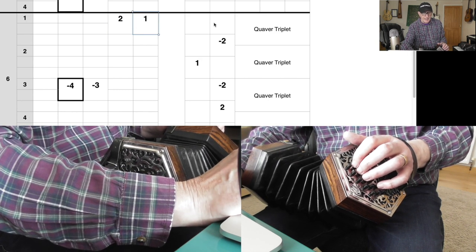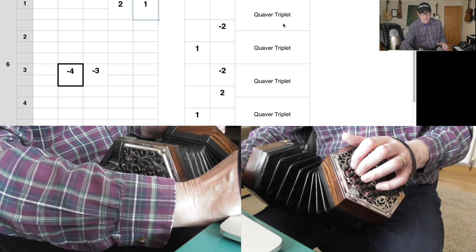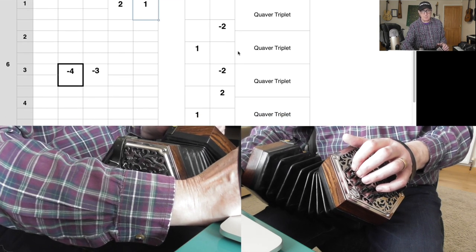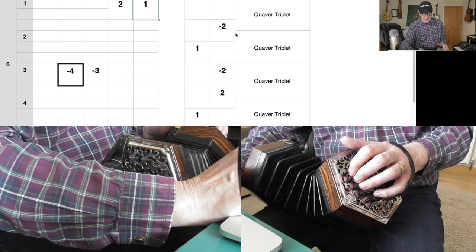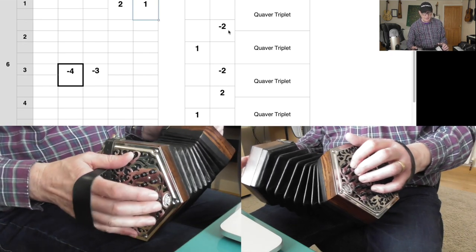And you see you've got four quaver triplets, so the four beats are split up into three parts each. Here, let's play this bar and you'll get the idea of it.